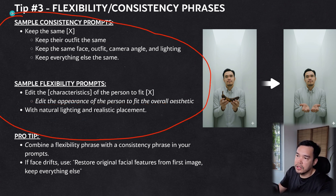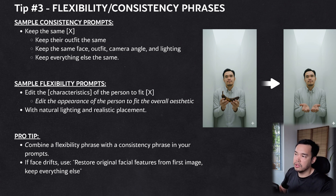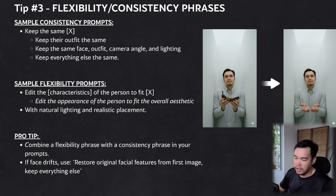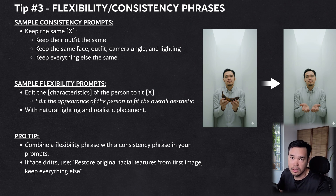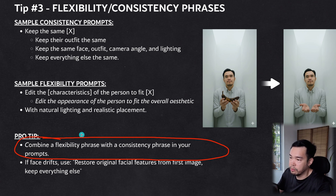These aren't strict templates — you're free to explore because Nano Banana is built on Gemini, a large language model with very good understanding of words. As long as you ask it to keep something consistent or to adapt it, it should get the idea. What's important is giving it that specific instruction. A pro tip: combine a flexibility phrase with a consistency phrase in your prompts.